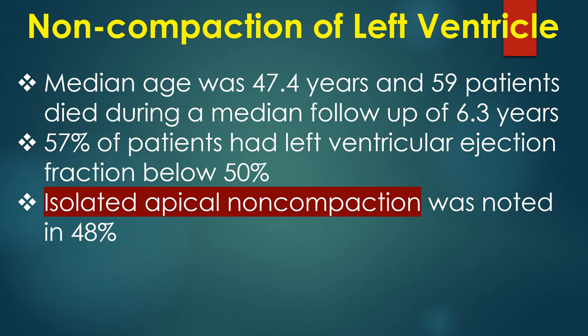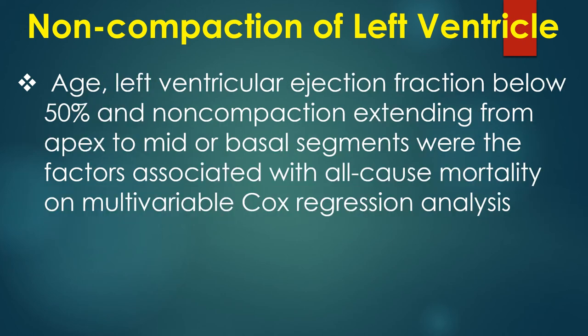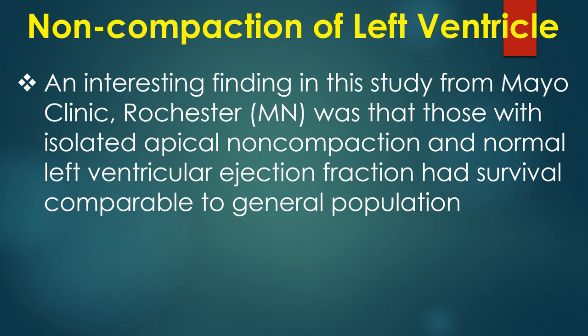Median age was 47.4 years and 59 patients died during a median follow-up of 6.3 years. 57% of patients had left ventricular ejection fraction below 50%. Isolated apical noncompaction was noted in 48%. Age, left ventricular ejection fraction below 50%, and noncompaction extending from the apex to mid or basal segments were factors associated with all-cause mortality on multivariable Cox regression analysis. An interesting finding from this Mayo Clinic study was that those with isolated apical noncompaction and normal left ventricular ejection fraction had survival comparable to the general population.